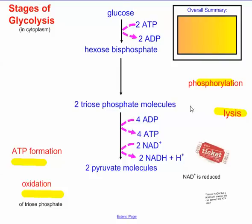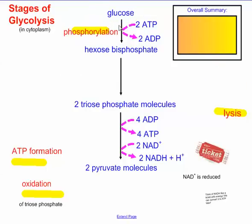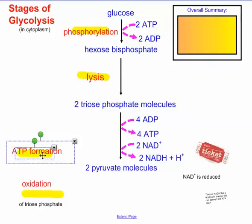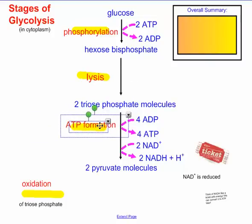Now let's name some of these processes. This first process is called phosphorylation — that makes sense because we're dropping off some phosphate groups. This is the splitting part, so we call this part lysis. ATP formation is pretty obvious here — this whole conversion helps us produce four ATP molecules.